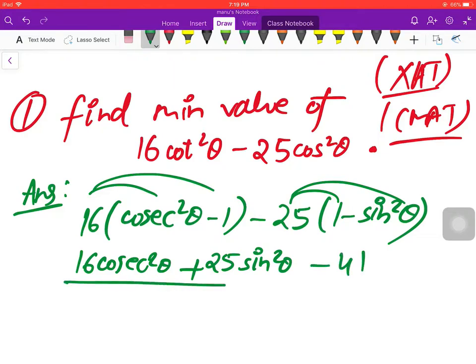Now, this minimum value is 2 root AB. Okay? This minimum value is 2 root AB.